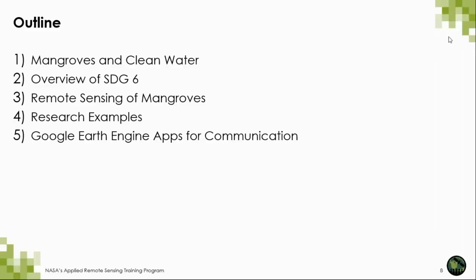As part of our training, we'll be going through five main objectives. First, we'll talk about mangroves and their roles in clean water. We'll provide an overview of SDG 6 — water for all. Then we'll start talking about remote sensing of mangroves and provide a range of research examples. And finally, we'll go through how to develop Google Earth Engine apps for communicating your science or results.